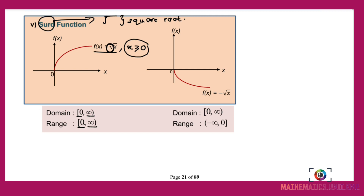For the second graph, f(x) equals negative √x, again with x greater than or equal to 0. The graph goes to the right but downward because of the negative sign at the front. The domain is from 0 to infinity and the range is from negative infinity to 0.